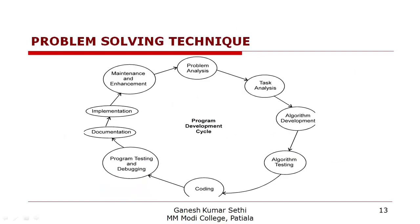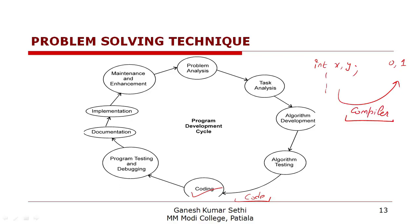Once the program is written, the code is in a high-level language like C, but the computer understands only binary language. So we need to convert these instructions into binary. A software called a translator — in C this is called a compiler — converts your program into object code in zero-one (binary) form.